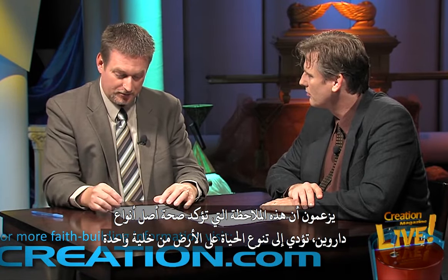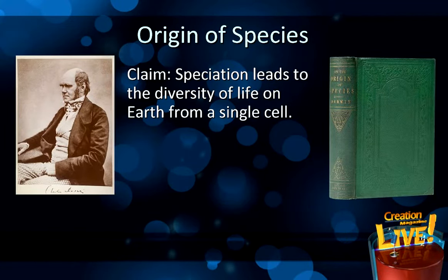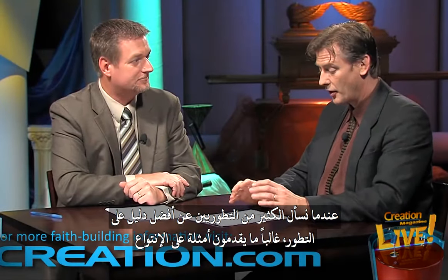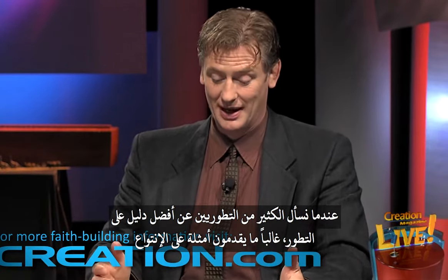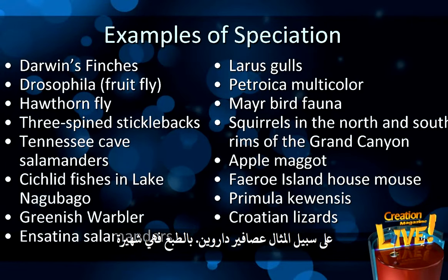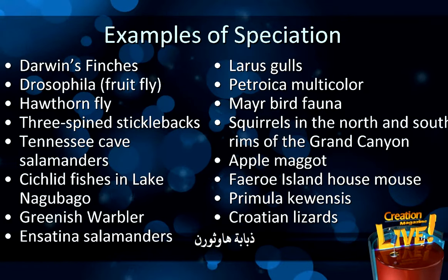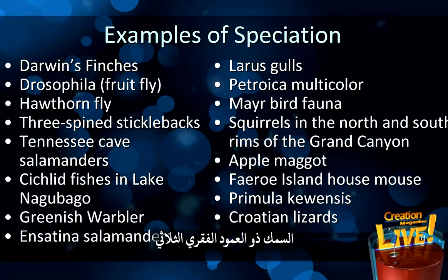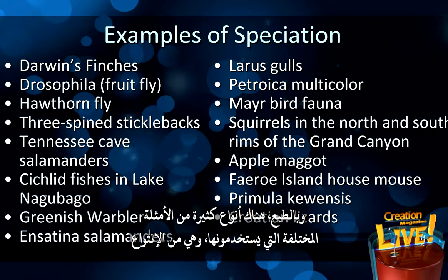Evolutionists claim this observation verifies Darwin's Origin of Species, leading to the diversity of life on earth from a single cell. Many evolutionists, when asked for the best evidence for evolution, will give examples of speciation — for example Darwin's finches, Drosophila fruit flies, the hawthorn fly, three-spined sticklebacks, Tennessee cave salamanders, and all sorts of different examples.